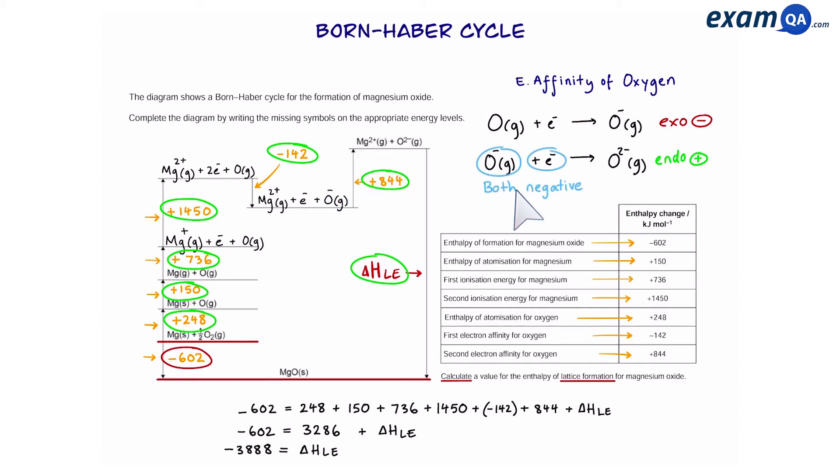And the reason behind that is because if you look at the second electron affinity, you're combining a negative electron with an oxygen minus ion. Both are negative, so they will both repel each other, meaning that it's going to require some energy to overcome that repulsion, hence why it's an endothermic reaction. In the first one, oxygen is neutral, electrons negative, so they will happily join together. In fact, this will even give out loads of energy, which is why it's exothermic.